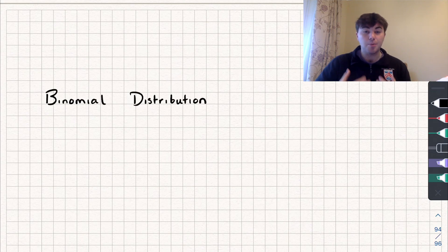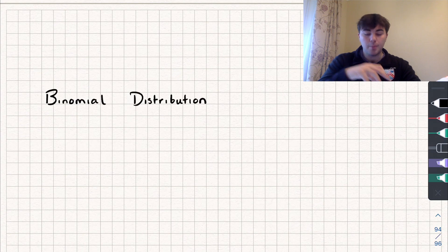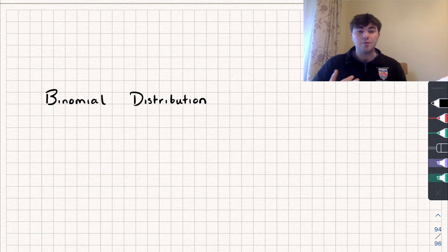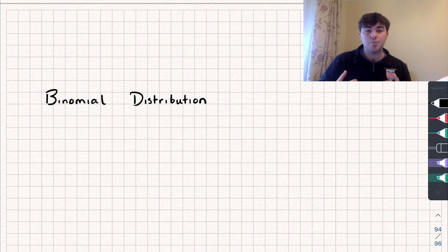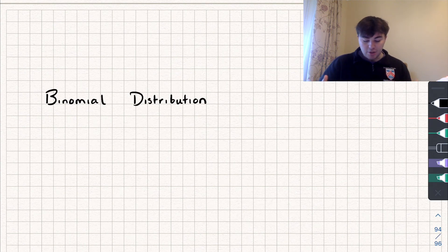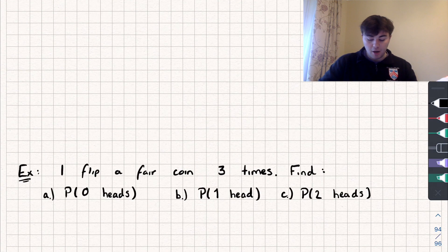In this video I'm going to introduce you to the binomial distribution. It will be useful if you're already familiar with the binomial coefficient — if not, I'll link that video in the description. I'm also going to timestamp the different parts of this video, so if you just want to skip to the criteria for using a binomial distribution or the exam question at the end, you can do that. Let's start with a question that introduces the binomial distribution quite nicely.